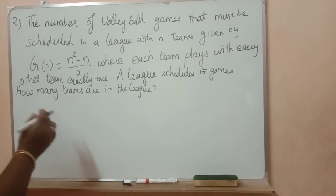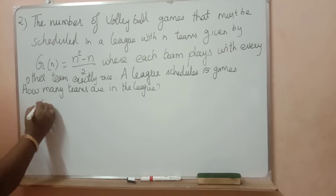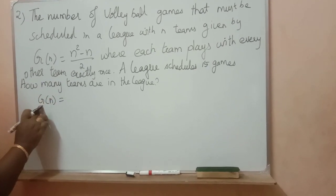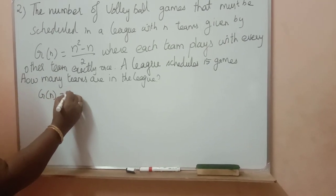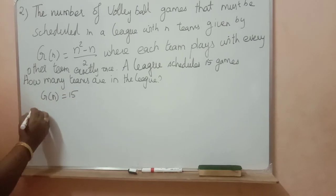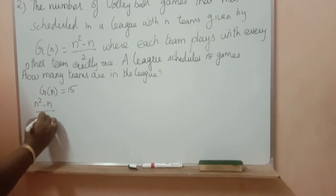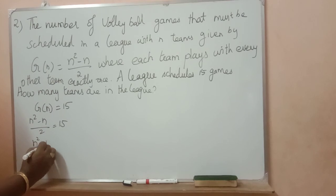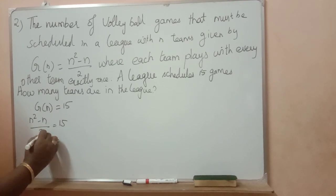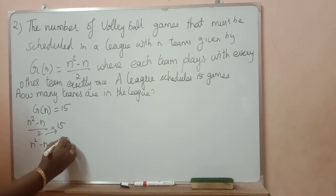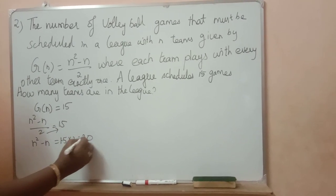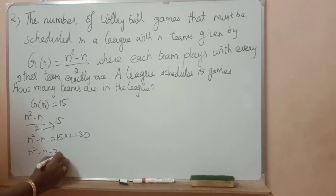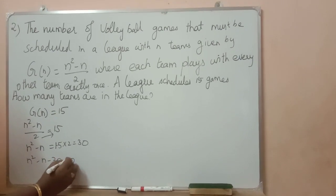We have to find the value of n. What is given? g of n is equal to 15. So, n square minus n by 2 is equal to 15. Multiply by 2: so, n square minus n minus 30 equal to 0. We have to factorize. Minus 30 into minus 1.